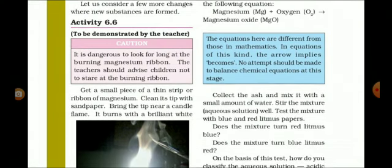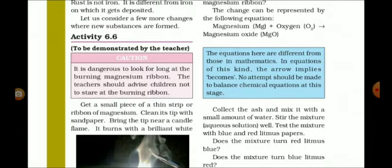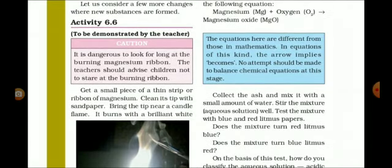This is the complete chemical equation, Mg plus O2 give rise to MgO. Also, the equation here are different from those in mathematics. In maths, we have mathematical equations. But in the mathematical equations, we have to balance both the left hand side equal to right hand side. But here, it is not needed to balance these equations. These kinds of equations, the arrow implies becomes. And no attempt should be made to balance the chemical equation at this stage. We are not required to balance these equations like the mathematical equations.